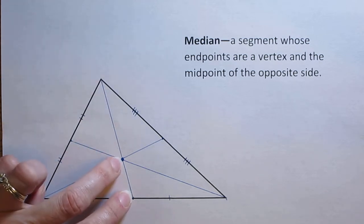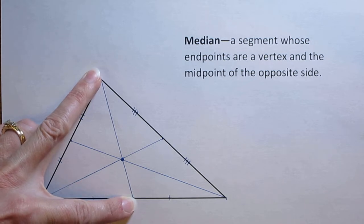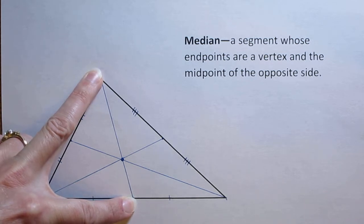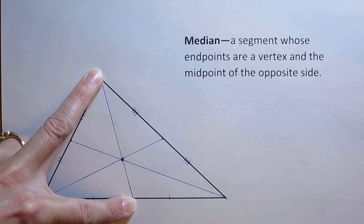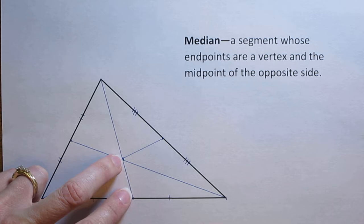this part right here will be ⅔ of that distance, and this will be ⅓ of that distance. So if your whole median is, let's say, 3 inches—okay, let's say your whole median were 3 inches long—this is going to be ⅔ of that, or 2 inches, and this is going to be ⅓ of that, or 1 inch.